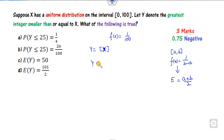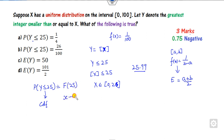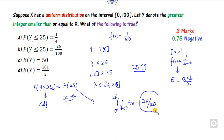What is the meaning of Y less than 25? The greatest integer is less than 25. If X is 25.999, the greatest integer is still 25. The interval is clear. The probability can be written as the CDF of 26. This is the integration from 0 to 26 of the PDF dx, which gives 26/100 as the right answer.